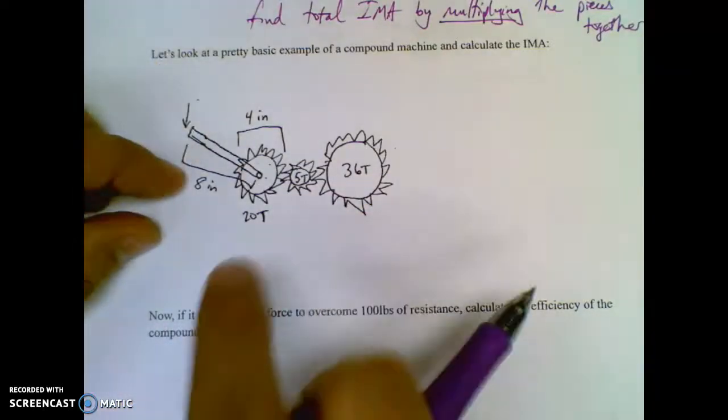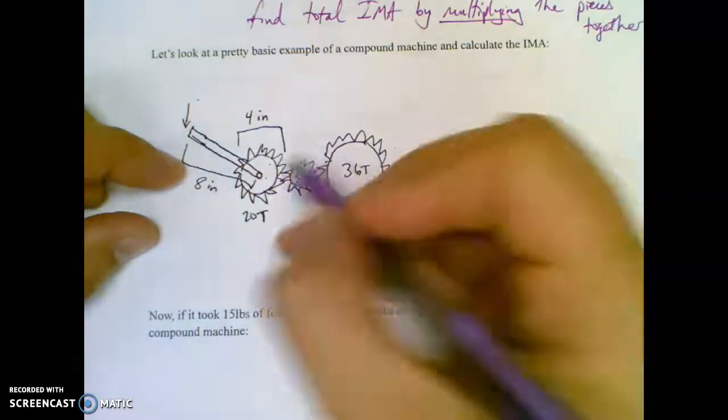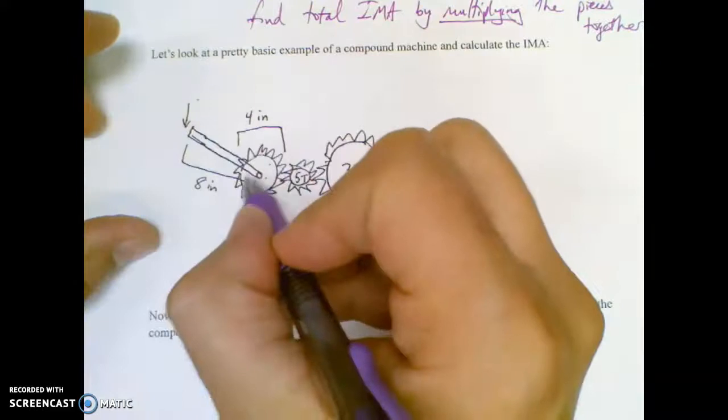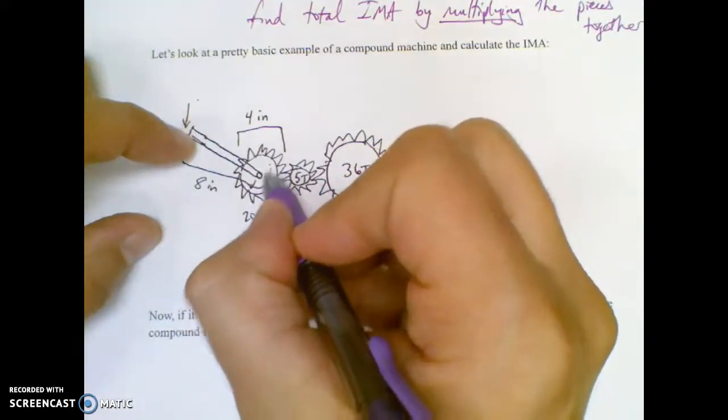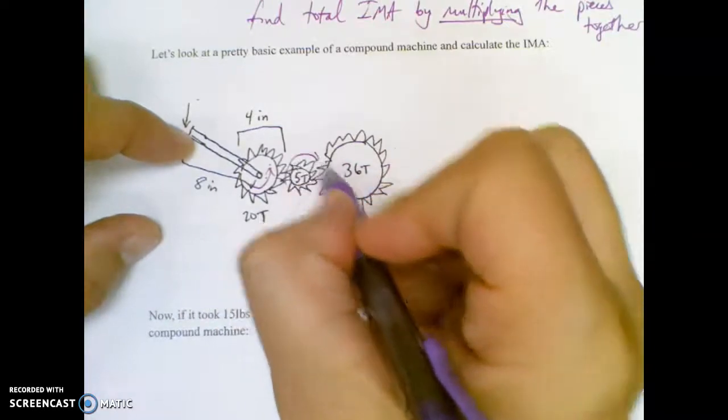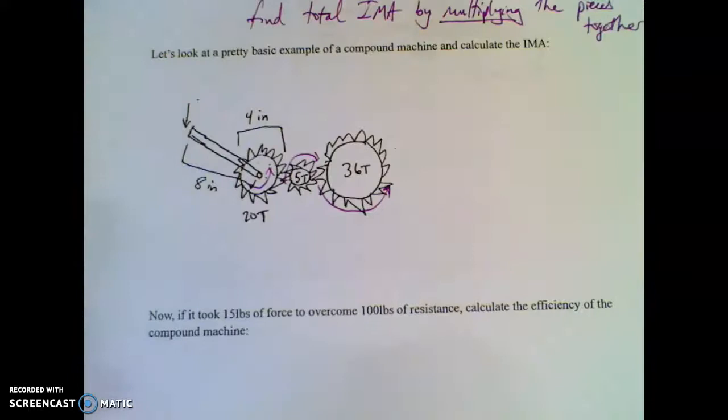Imagine pulling down on this. It'll make this guy rotate this way. If I pull down here, it'll make this one spin up, it'll make this one spin down, it'll make this one spin back up. So you got some turning going on there.